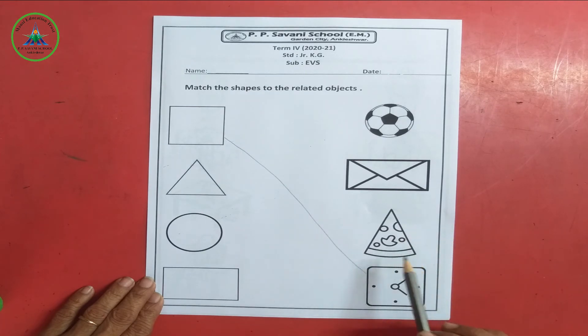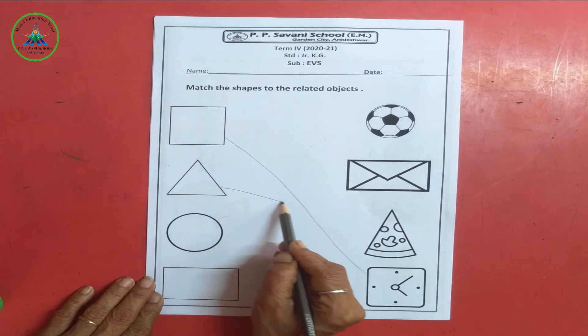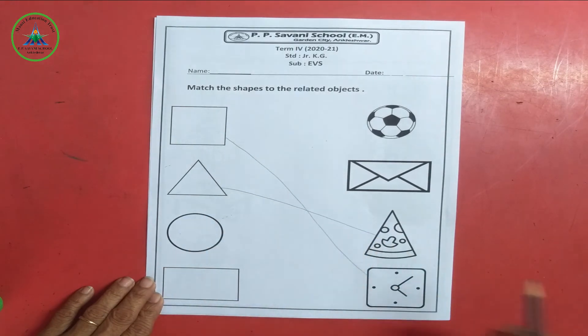Okay. Pizza shape is triangle. Yes. We will match triangle shape with pizza. Okay.